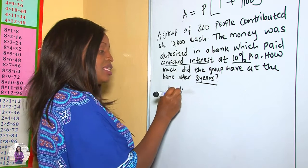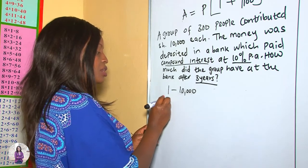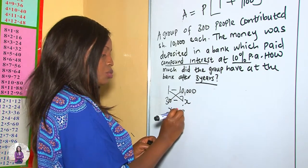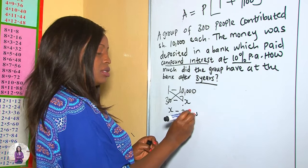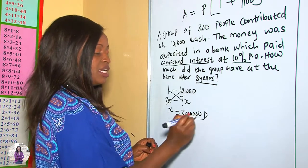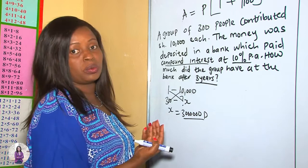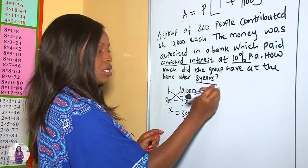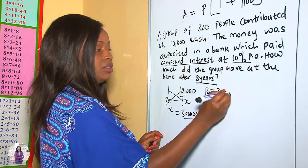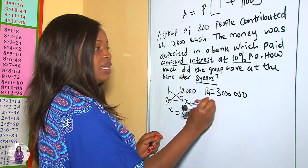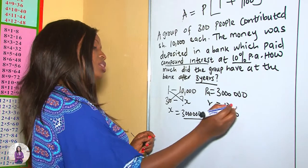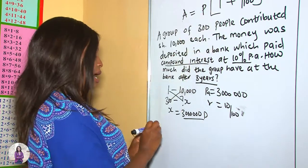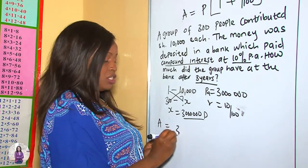One person contributes 10,000, and there are 300 people, so we cross-multiply: x = 300 × 10,000 = 3,000,000 shillings. This is the money deposited, which is our principal amount. So our principal is 3,000,000 and our rate is 10%, which is 10 over 100.